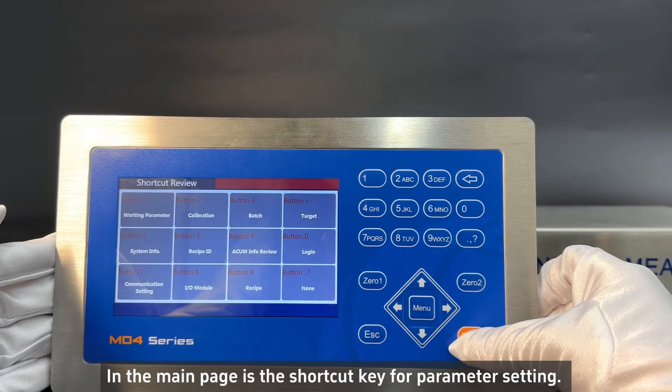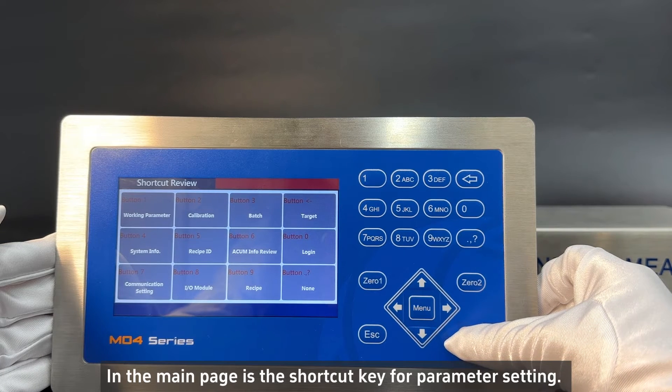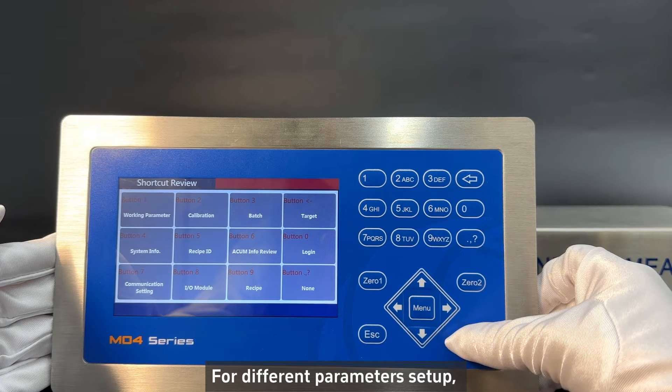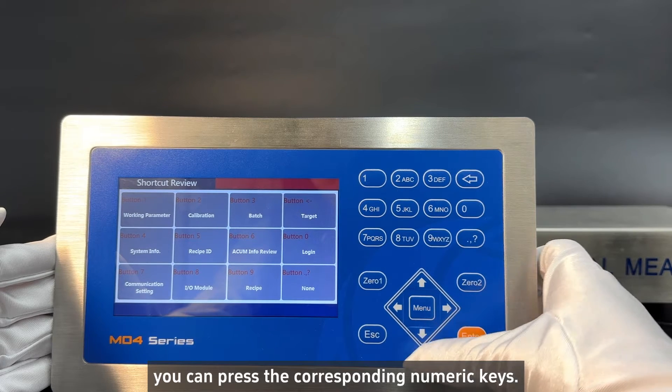In the main page is the shortcut key for parameter setting. For different parameters setup, you can press the corresponding numeric keys.